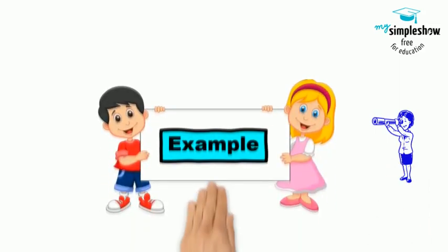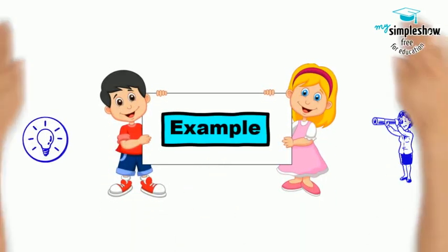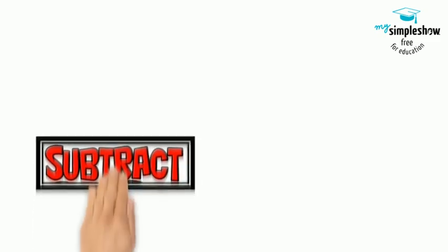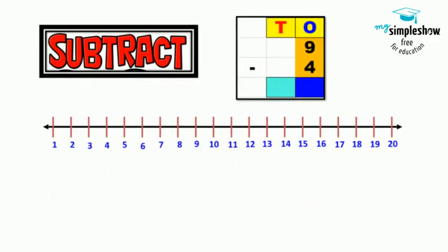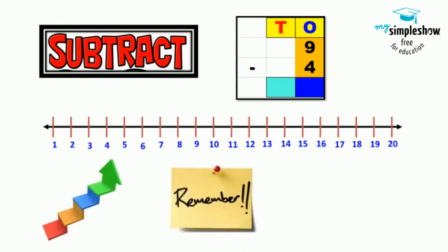Let's have a look at another example for a better understanding. Now we want to subtract the numbers 9 minus 4 using the number line. Do you remember the steps we followed the last time? Let's repeat them again.